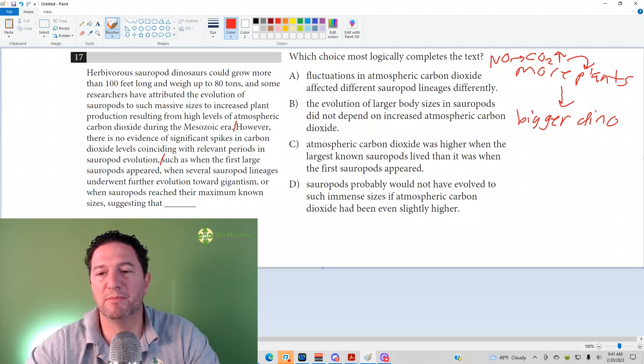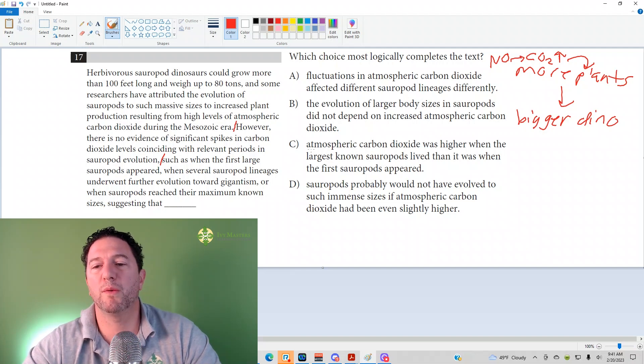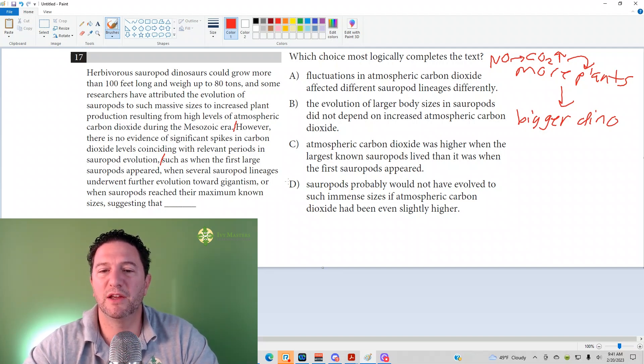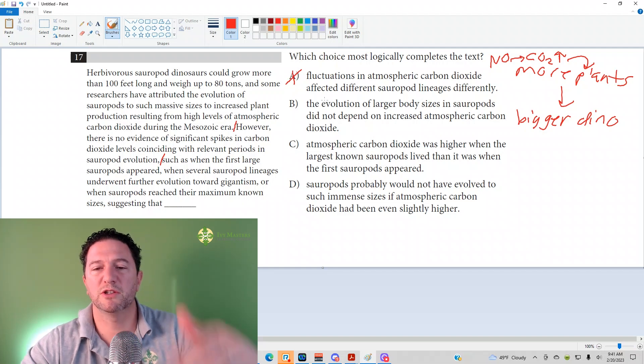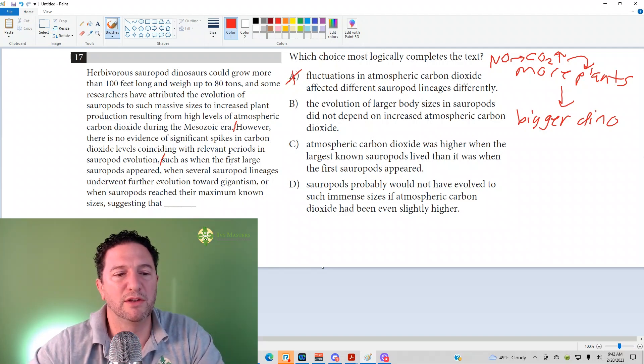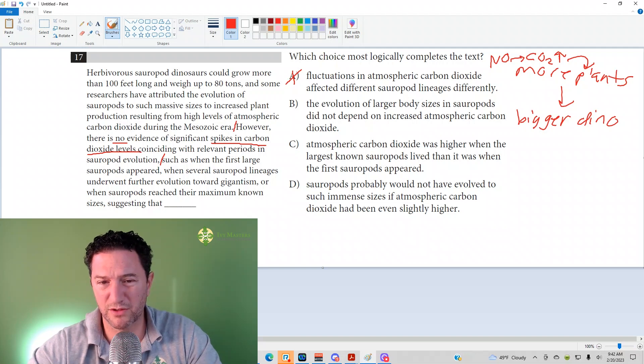Answer choice A: Fluctuations in atmospheric carbon dioxide affected different sauropod lineages differently. No, absolutely not, because it's not talking about fluctuations in carbon dioxide levels. Fluctuations would be going up and down. It just says that there's no spikes in carbon dioxide levels. So if anything, there's no fluctuations, but definitely no spikes.